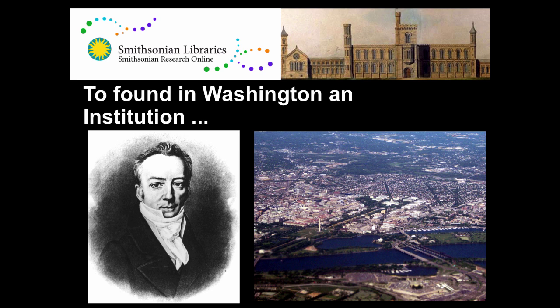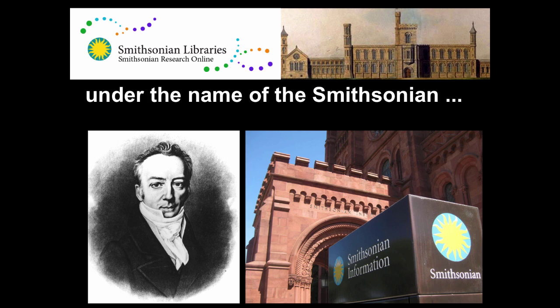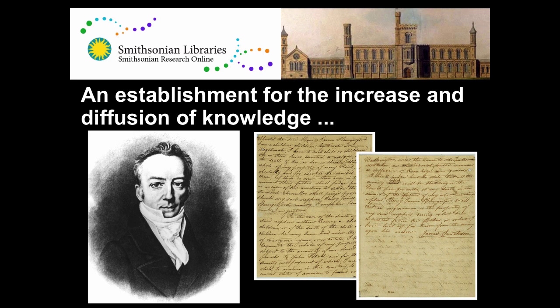The Smithsonian Institution was founded at the bequest of James Smithson, who was an English scientist who, after a series of complicated things, left his entire estate to the United States to found in Washington an institution under the name of the Smithsonian — an establishment for the increase and diffusion of knowledge. It's these two missions, the increasing of knowledge and the diffusion of knowledge, that we're rolling into our Smithsonian Research Online.